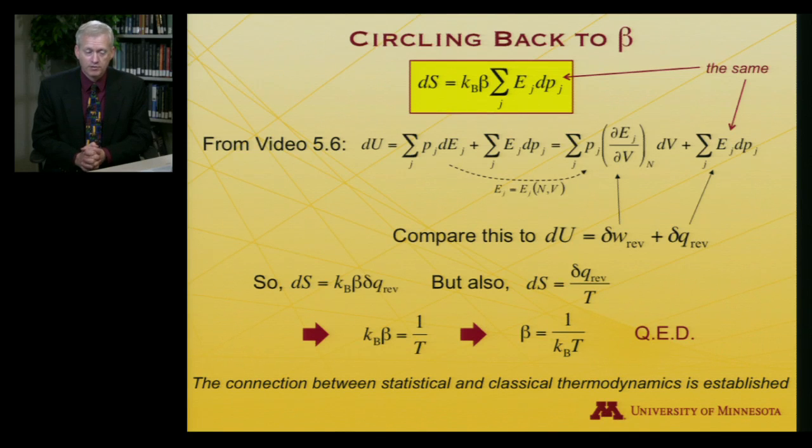So we finally accomplished a proof, and this was really how Boltzmann related. Boltzmann did the statistical analysis, noted the similarity between his equations and the classical thermodynamic equations, and was able then to establish the value of his constant and its relationship to classical thermodynamics. So a tour de force piece of work on Boltzmann's part. And thus we've established a connection between statistical and classical thermodynamics.